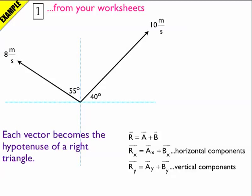Each vector is basically the hypotenuse of a right triangle. In the case of the 10 meters per second, it goes to the right and then it goes up — some number of meters per second to the right and some number of meters per second upward. Remember, 10 meters per second is a concept of velocity, so you've got to include the units. The other vector goes up some number of meters per second and to the left some number of meters per second. Those are the components around the angles of the two vectors.